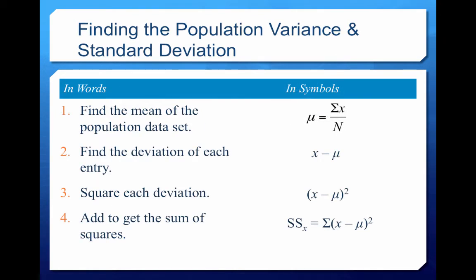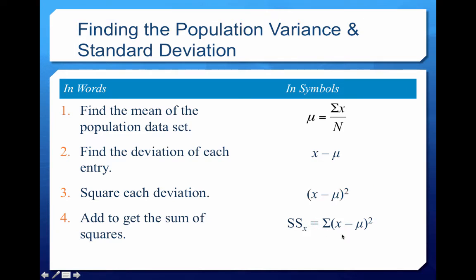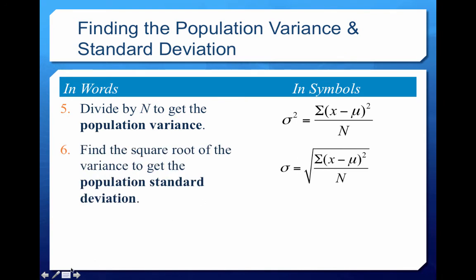Because we square each deviation, all terms are positive, and we're dividing by a positive sample size, so sigma squared is always positive. You'll never have a negative number under the square root. Both variance and standard deviation are always positive — this applies to samples as well.